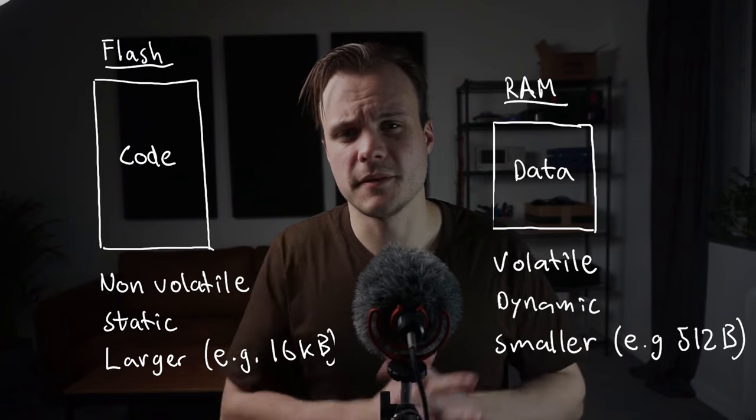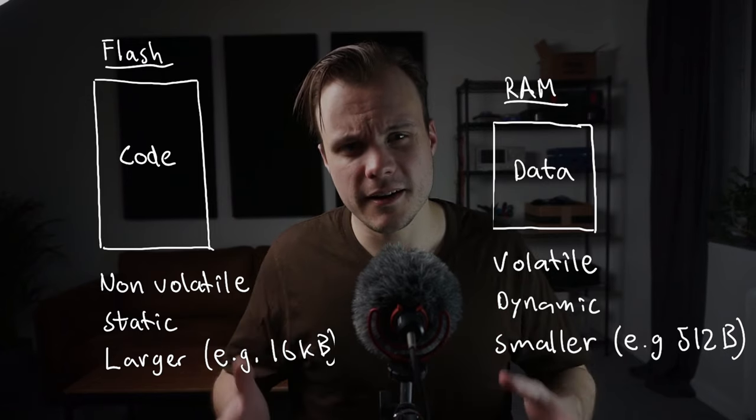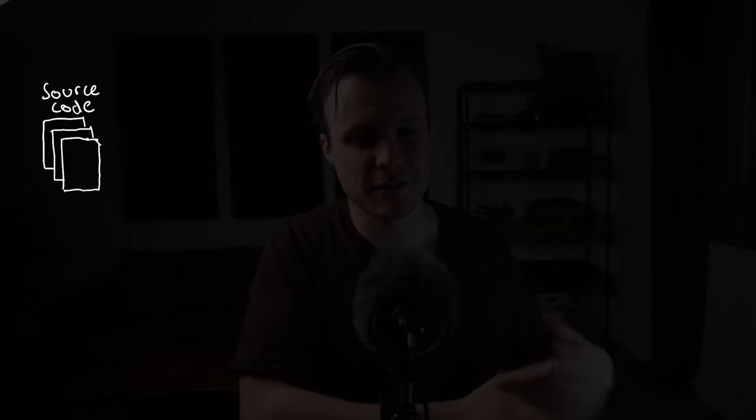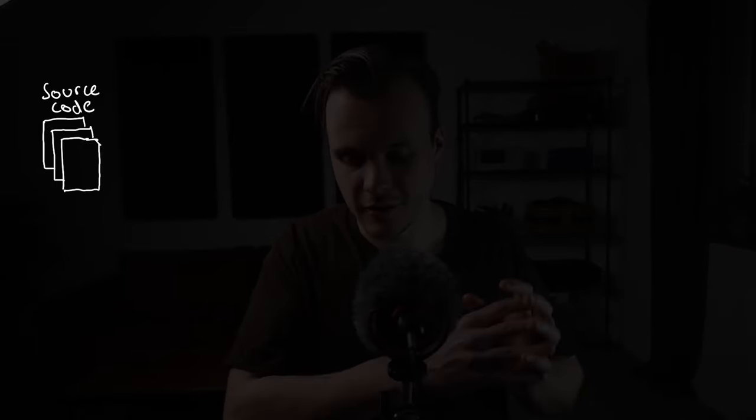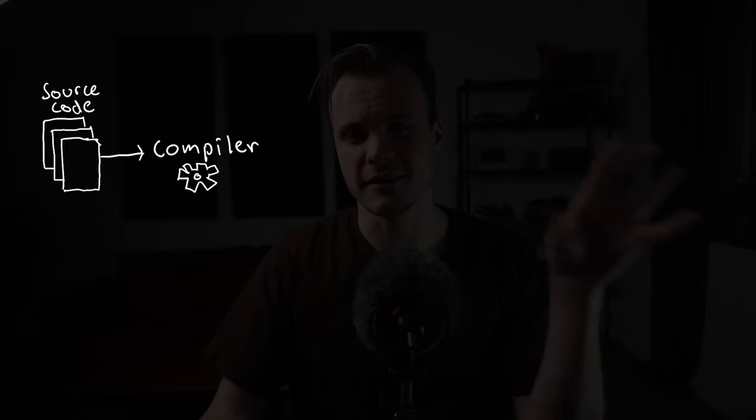So that's the two types of physical memory inside the microcontroller. Now before I get to the code example, I want to first explain the process of going from source code all the way to machine code stored inside memory, because having a basic understanding of that is going to be important to better understand the code example. The way that process looks: you start with a bunch of code — I'll use C as an example. The first thing you do is run your compiler to compile this code into machine code. The compiler translates the source code into machine code and also divides it into different sections.